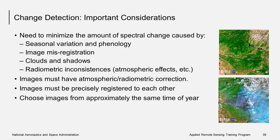There are several important considerations when using satellite imagery to detect change, regardless of what method you choose. First and foremost, you need to minimize the amount of spectral change caused by seasonal variation and phenology. If you are looking at annual change, it is best to choose imagery from approximately the same time of year and ideally the same month. Images must be precisely registered to each other, otherwise you will get change resulting from misregistration. Lastly, you must atmospherically and radiometrically correct the imagery to reduce changes due to atmospheric and radiometric differences in the image dates.